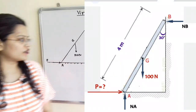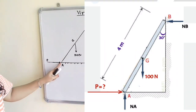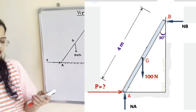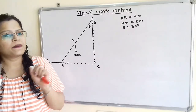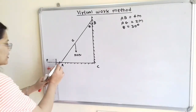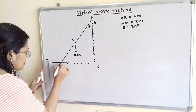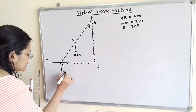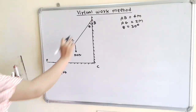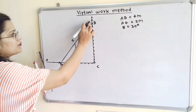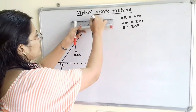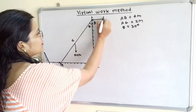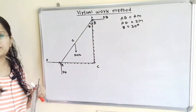If we observe this diagram, the ladder is in point of contact A with the horizontal fixed surface. We will draw one perpendicular line to the horizontal surface — this is the normal reaction at point A, N_A. At point B, the ladder is in contact with the vertical surface, so we draw a perpendicular line there: normal reaction at point B, N_B.